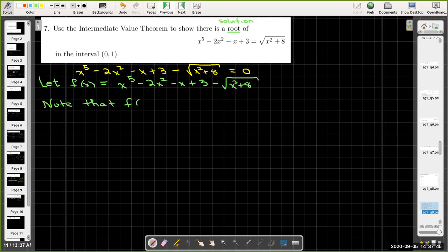So I'm going to say note that f(0) is 0, 0, 0, 0, 3 minus radical 8. Now radical 8 I know to be 2 times root 2. I know square root of 2 is about 1.4. So 3 minus 2 root 2 is going to be positive.